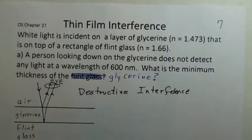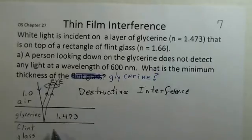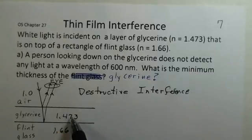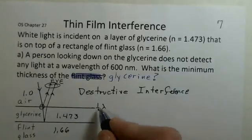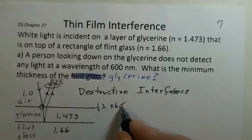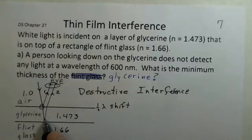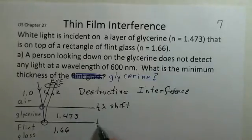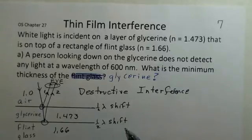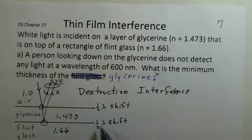For these thin films we have to consider the phase shift at reflection. Air has index of refraction 1.0, glycerin 1.473, flint glass 1.66. Our rule is: if we're bouncing off a material with higher index of refraction, there is a half-wavelength phase shift. So there's a half-wavelength phase shift at the first reflection, and also at the second reflection where we go from 1.473 into 1.66. Both reflections involve a half-wavelength phase shift.